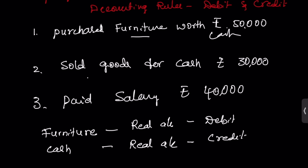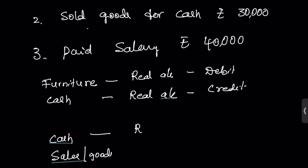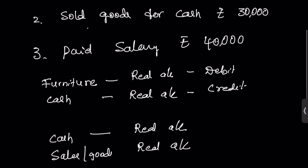Another example: sold goods for cash. You are receiving cash, so one account is cash and another is goods, which we can take as sales. Cash is a real account and sales is also a real account. When you make sales, you receive cash — cash is coming in, so cash account is debited. Goods are going out of your business — credit what goes out — so sales account is credited.